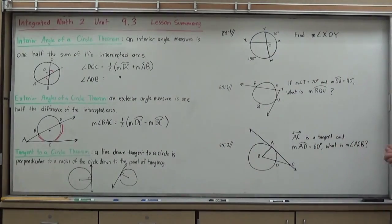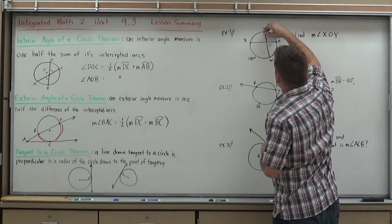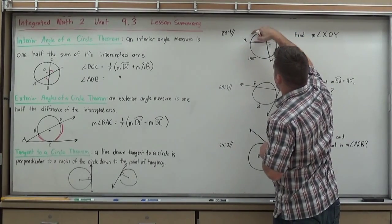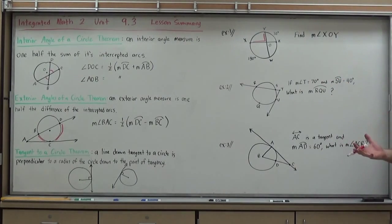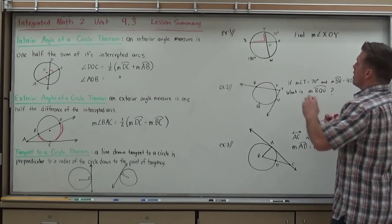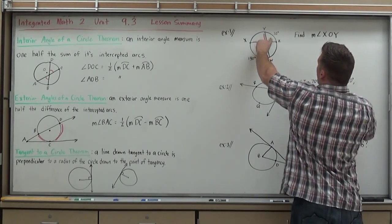So, let's try it. In this problem, I want to find the measure of angle XOY. That'd be this angle here, XOY. Now, you notice I have no arc measures to even work with there. So, at first you might be thinking, I have no way of doing it, but there's other things you can find. So, just start finding whatever information you can.